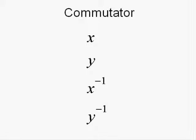A commutator is an algorithm of form x, y, x inverse, y inverse, where x and y represent two different moves, and then the first move is inverted, and then the second move is inverted.